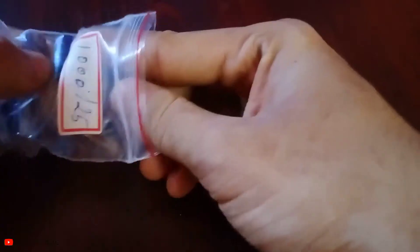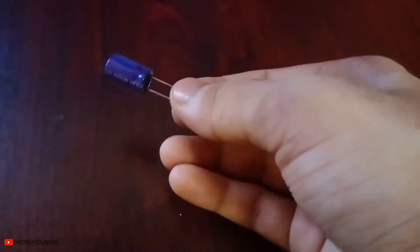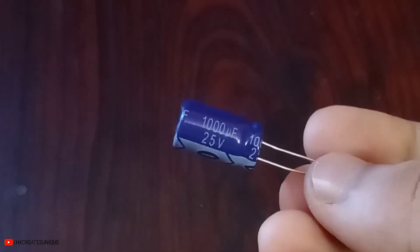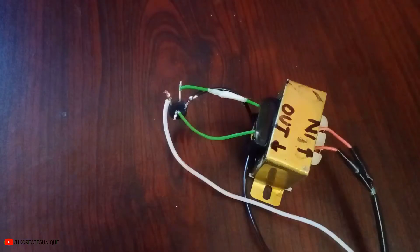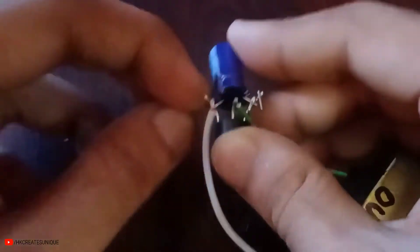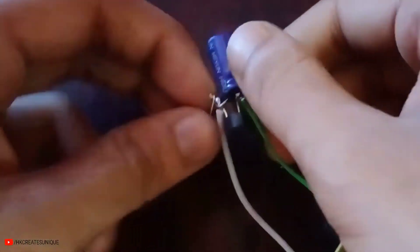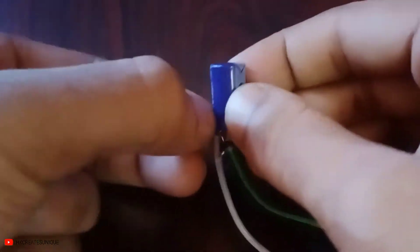To smooth out the DC voltage, let's use a capacitor at the output. This is a 1000 microfarad 25 volts electrolytic capacitor. Make sure you connect negative to negative and positive to positive.